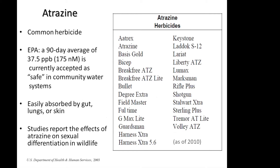To get to our studies on atrazine — it's a common herbicide. The EPA gives a safe level of a 90-day average of 37.5 ppb, parts per billion, which translates to 175 nanomolar in community water systems. This compound is easily absorbed by the gut, lungs, or skin. Published studies, particularly by Tyrone Hayes and others, have reported the effects of atrazine on sexual differentiation in wildlife. On the right, you can see a list of different herbicides that contain atrazine as the active component.